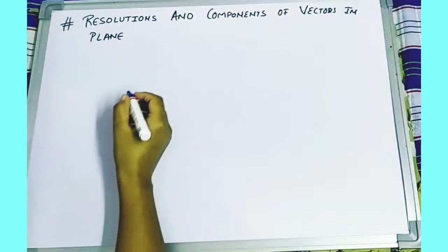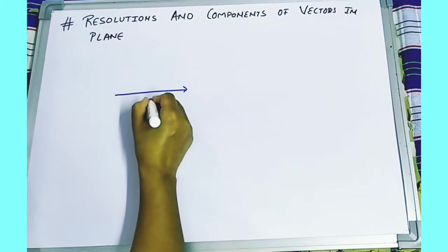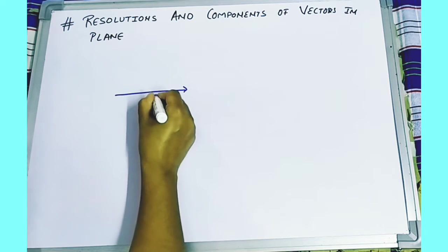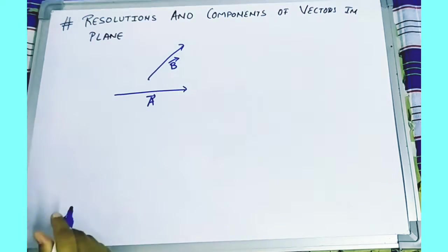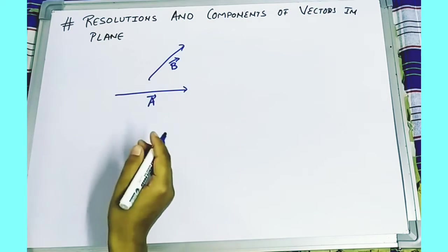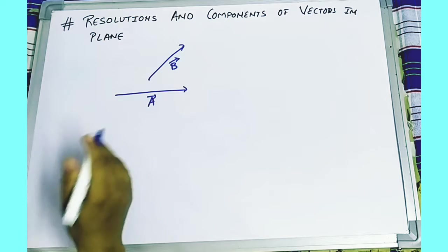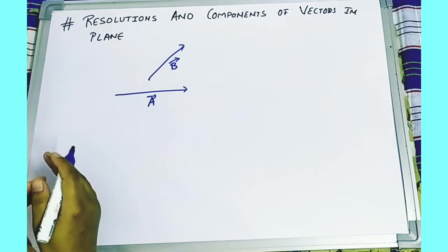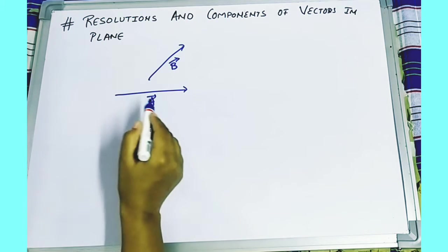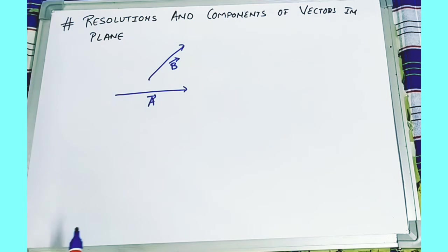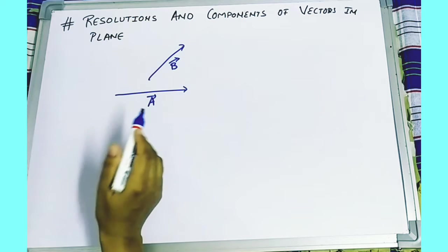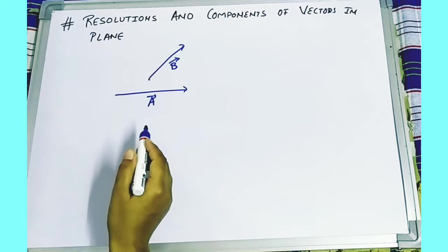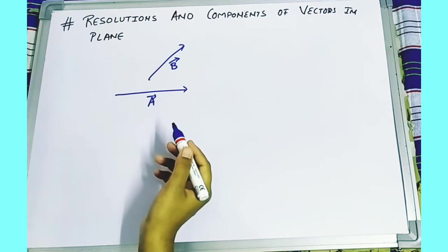Suppose we have two vectors: vector A and vector B. Now I want to resolve this vector. As we have already seen, these two vectors are coplanar, meaning they both lie in the same plane. So what we are going to do is resolve vector A and vector B using the triangle law of vector addition.